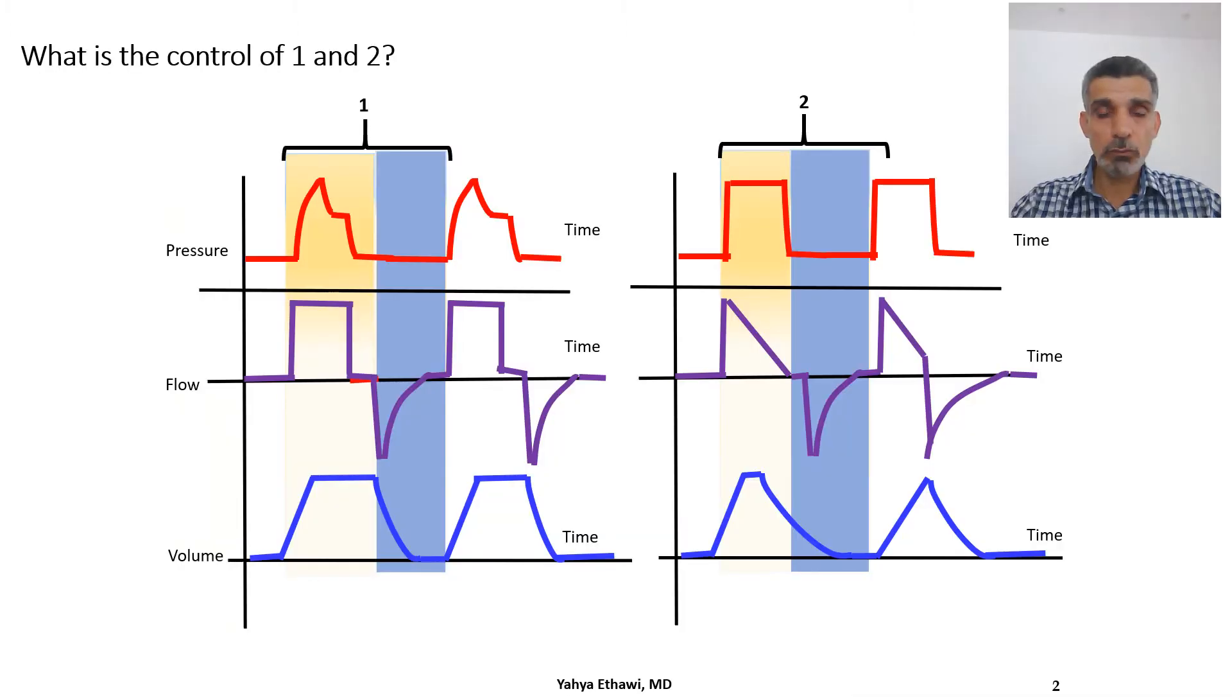By looking at this graph, you can see it's a graph because it shows parameters which are pressure, flow, and volume versus time. If you look at picture number one and picture number two, can you guess what is the control or what is the strategy of the ventilation?